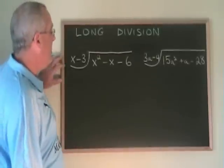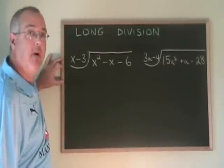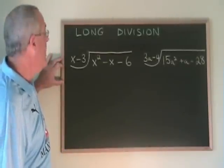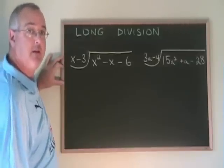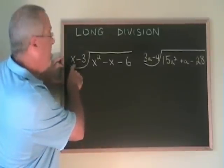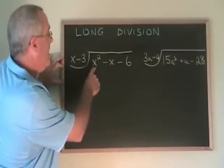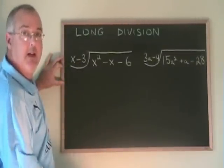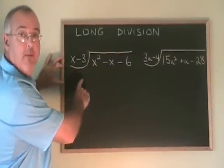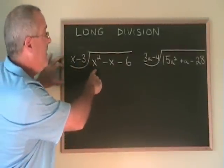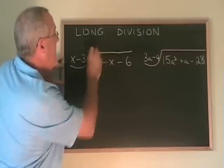The first example has x squared minus x minus 6 divided by x minus 3. And the first thing we do is we ask ourselves, what would we have to multiply this x by in order to get x squared? It's the same thing as if you divided x squared by x. x would have to be multiplied by another x to give x squared, so we write an x here.